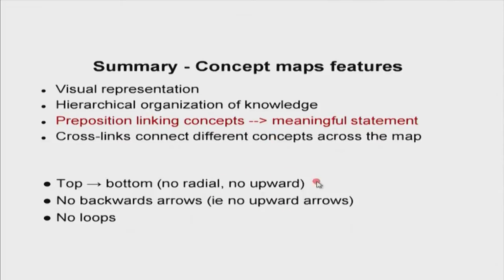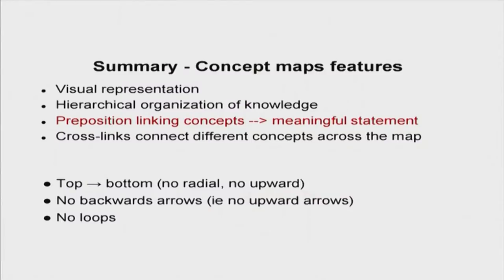Some logistical points: concept maps go top to bottom, not radially, and usually not upwards — it is just a convention. The top-down direction also indicates hierarchy. There are no upward or backward arrows, and definitely no loops. This is not an algorithm; it is a static picture of an entire complex, interconnected body of knowledge. That covers what comprises a concept map and its features.